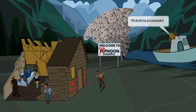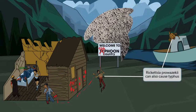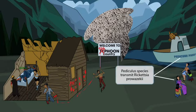Now let's talk about the last rickettsial species: Rickettsia prowazekii. Can you see this nasty critter on this boat? It's prowling — prowling for prowazekii. By definition, prowling means to move with stealth in order to catch prey. Rickettsia prowazekii is another cause of typhus, so a rash that starts on the trunk and spreads out from there.